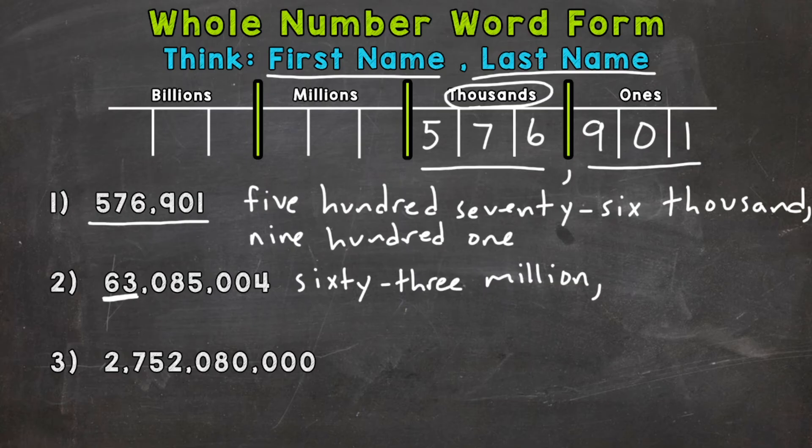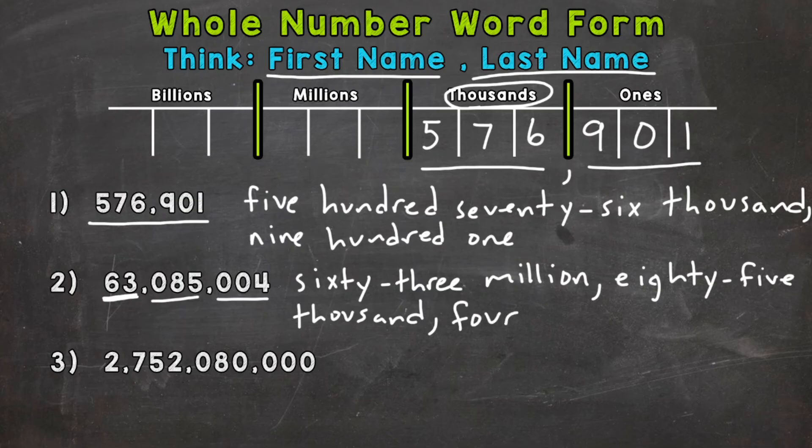Now we move to the next section or period. Read the number as is, and we have an 85 there. And we're sitting in the thousands period. So eighty-five thousand, comma, and we're over to the ones period. And remember, for the ones period, we just read the number as is. There's no last name. So we end with four. So we have sixty-three million, eighty-five thousand, four.